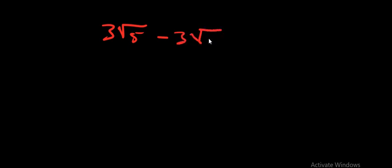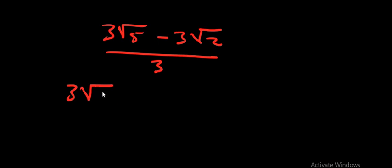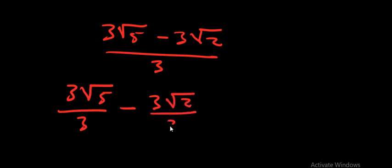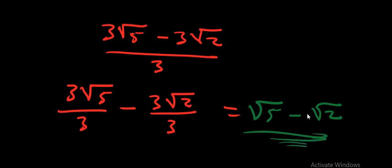So we have 3 square root 5 minus 3 square root 2 over 5 minus 2, which is simply equal to 3. We can then separate them: 3 square root 5 over 3, minus 3 square root 2 over 3. Three into three is one, so what we have is just square root 5 minus square root 2. This is the answer for our first example.